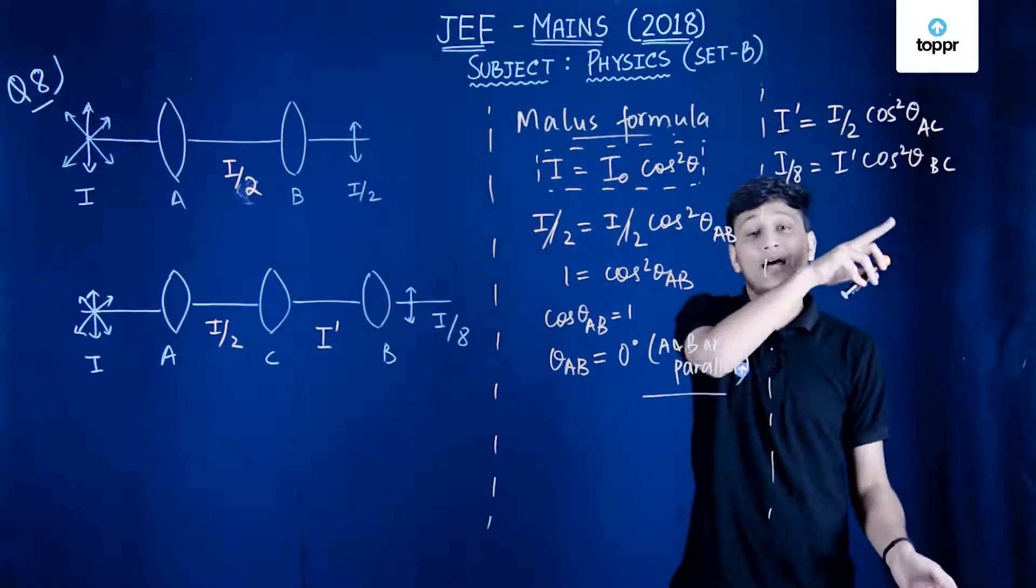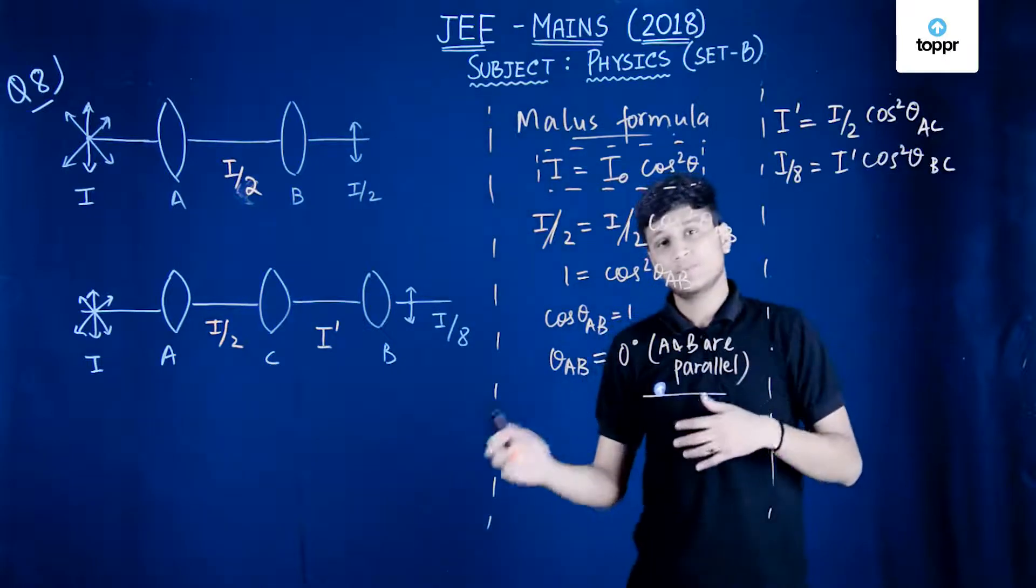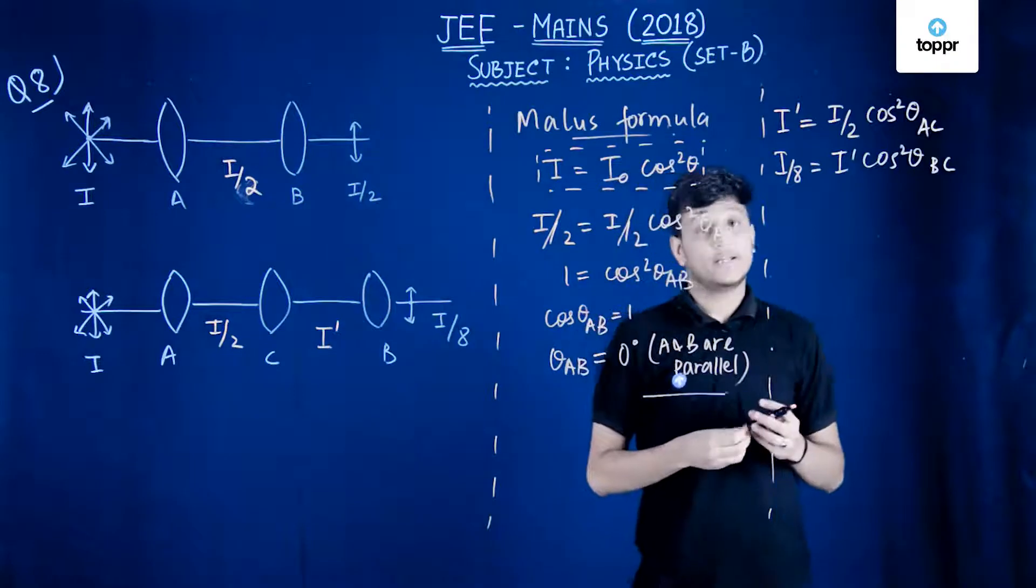So this theta AC and theta BC are actually equal, and this is very important to notice from this equation. Now because theta AC and theta BC are equal.